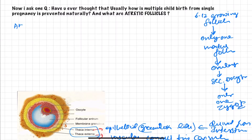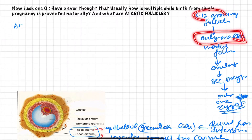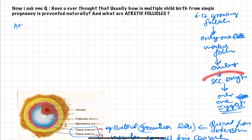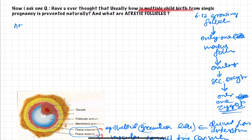If two were to mature, two zygotes would form, but only one is forming. So, since only one of the twelve follicles matures into the mature follicle and releases one secondary oocyte, only one zygote is formed. That is how multiple child birth is prevented naturally.